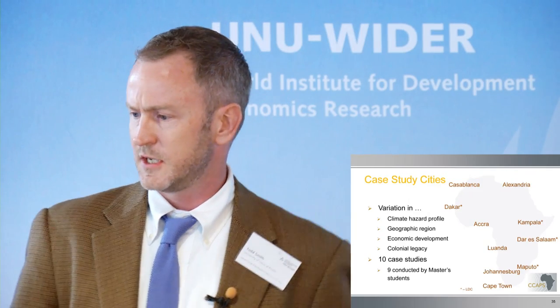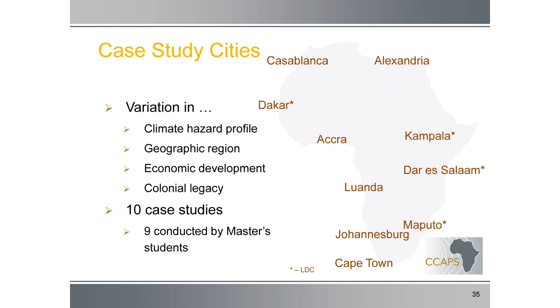Across climate hazards — why does one climate hazard get better responses than another in the same city? These are our cities. We've chosen them for variation in climate hazards, geographic region, economic development, and colonial legacy. Eighteen master's students will be going to nine of these cities, and I'm working on one of these case studies. Anyone with expertise in these cities, please see me offline. And with that, I'm going to hand this over to Jennifer.